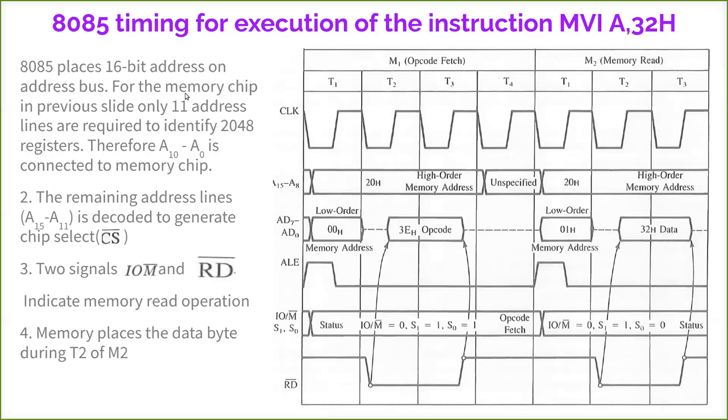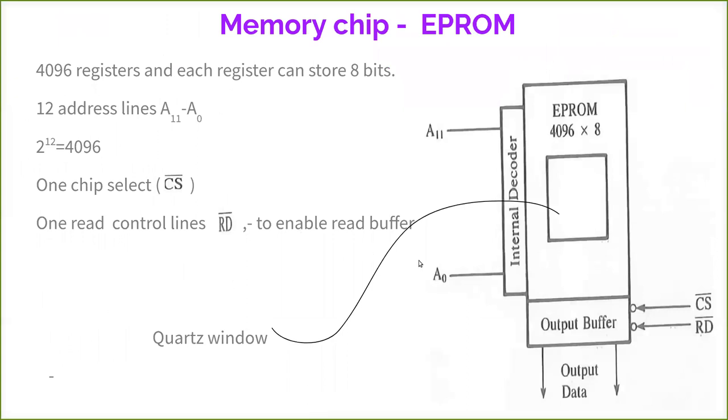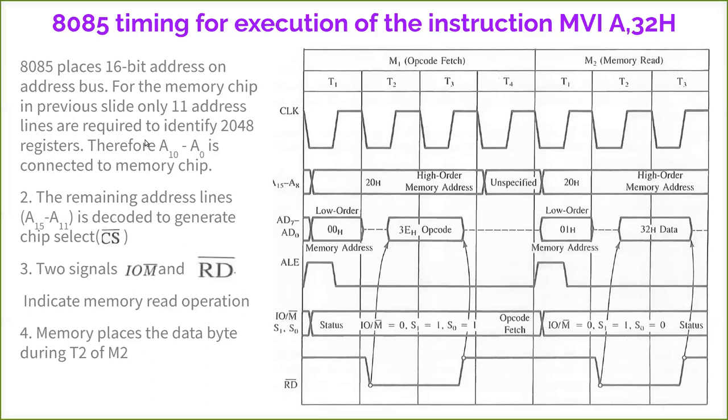8085 places 16-bit address on address bus. For the memory chip in previous slide, only 11 address lines are required. We need only 11 address lines to identify 2048 registers. Therefore, A0 to A10 is connected to the memory chip. The remaining address lines, from A11 to A15, is decoded to generate a chip select. Suppose there are more than one memory chip, from which chip it has to be read, for that we use this A11 to A15. The selection of the chip is done by this.